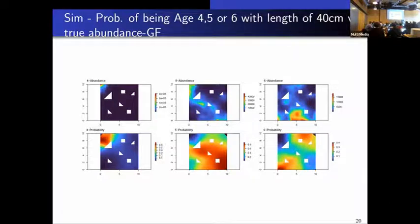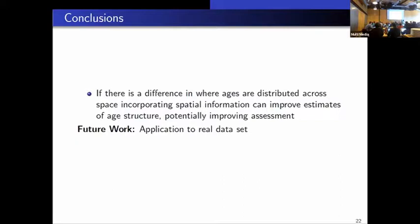So in conclusion, if there's a difference in where ages are distributed across space, incorporating spatial information can improve estimates of age indices, potentially improving assessment. All right, thank you.